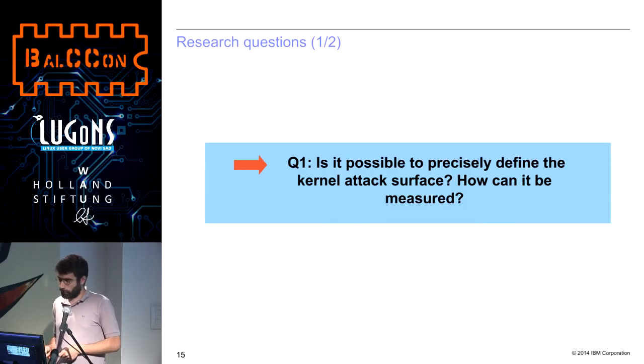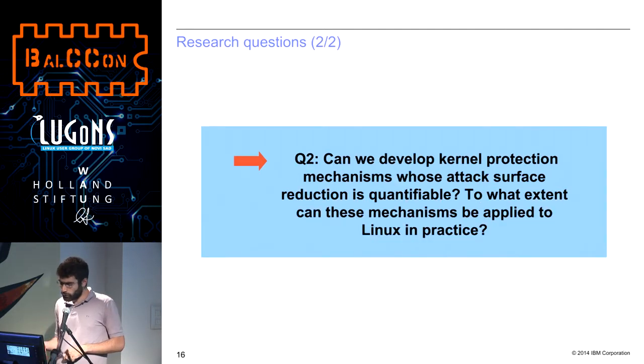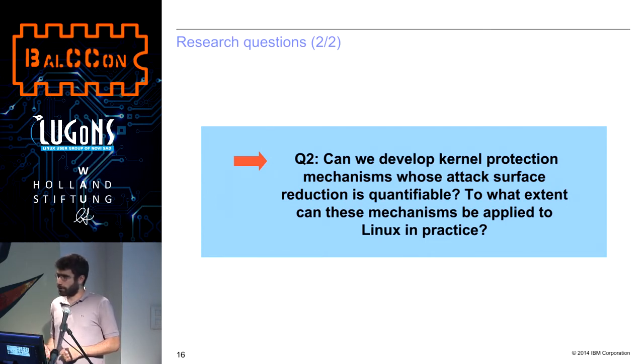That's essentially the first question I address: is it possible to precisely define the kernel attack surface and then measure it? Once we do that, we can in turn develop kernel protection mechanisms whose attack surface reduction will be quantifiable — we will be able to say, oh, this has that much reduction; if we tweak it in that way, we will reach this much reduction. And of course, we want this to be practical, not just theoretical stuff. So I apply this to the Linux kernel in practice.